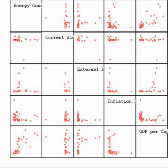Inferential statistics uses patterns in the sample data to draw inferences about the population represented, accounting for randomness. These inferences may take the form of answering yes/no questions about the data (hypothesis testing), estimating numerical characteristics of the data (estimation), describing associations within the data (correlation), and modeling relationships within the data, for example, using regression analysis. Inference can extend to forecasting, prediction and estimation of unobserved values either in or associated with the population being studied, and can include extrapolation and interpolation of time series or spatial data, and data mining.